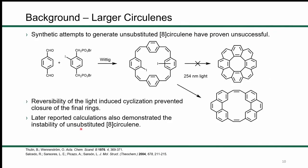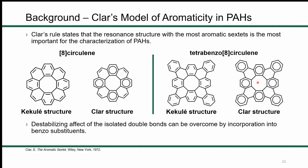The first report attempting to synthesize 8-circulene was way back in 1976, using a light-induced cyclization reaction to attempt to close the final four rings. They were only able to produce a partially closed molecule, and later calculations shed light on this: the unsubstituted 8-circulene molecule itself is inherently unstable. To understand this, we have to use a relatively unknown theory — Clar's model of aromaticity in polycyclic aromatic hydrocarbons.